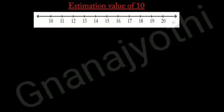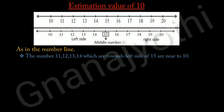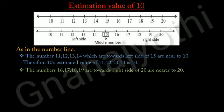Now, let us understand the estimation value of 10. Draw a line and write the numbers from 10 to 20. Mark the middle number — the number 5 in the units place is the middle number between any two 10s. Then mark the left and right side of the middle numbers. As in the number line, the numbers 11, 12, 13, 14, which are towards the left side of 15, are near to 10. Therefore, the 10's estimated value of 11, 12, 13, 14 is 10.